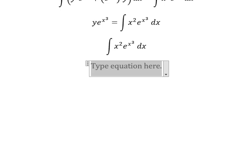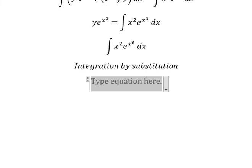We need to use integration by substitution. I will set u equals x to the power of 3. Then we take the first derivative of both sides, and we get 3x squared. Because we don't have the factor 3 in our integral, we need to divide both sides by 3.